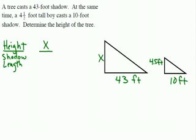Height of the tree is unknown. X feet. Shadow length is 43. And if you go to the boy, it's going to get reduced to 10 feet for the shadow length. Four and a half feet for the height. So similar shapes are just reductions or enlargements of each other. Just like a copy machine can reduce or enlarge objects. The proportions stay the same.